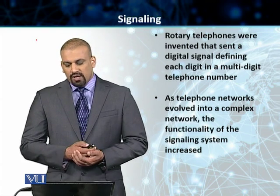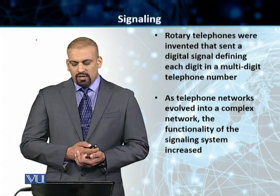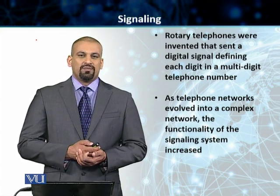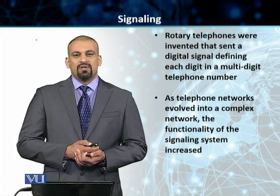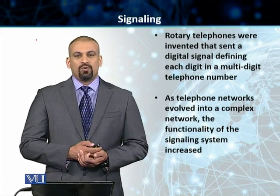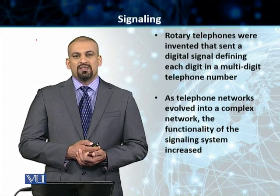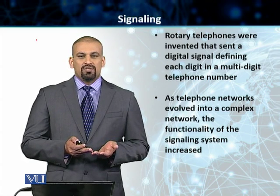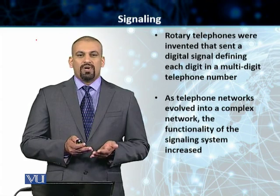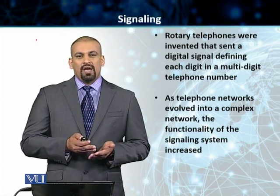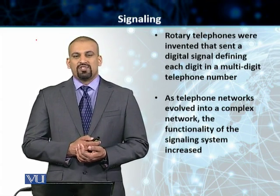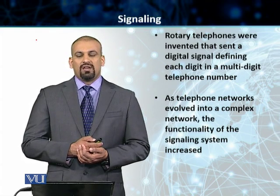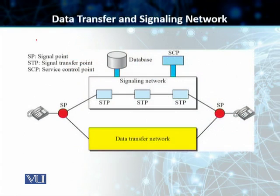As the telephone networks evolved into a more complex network, the functionality of the signaling system increased as well. The signaling system was not just used for connecting two subscribers — it was able to control things like busy tones, ringtones, the management and monitoring of an ongoing call, and a lot of other functionality also became part of the signaling network in a telephone system.